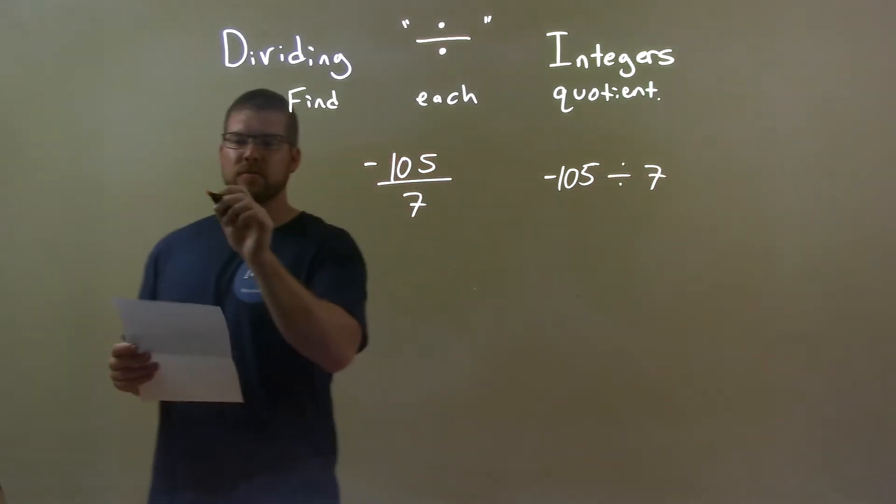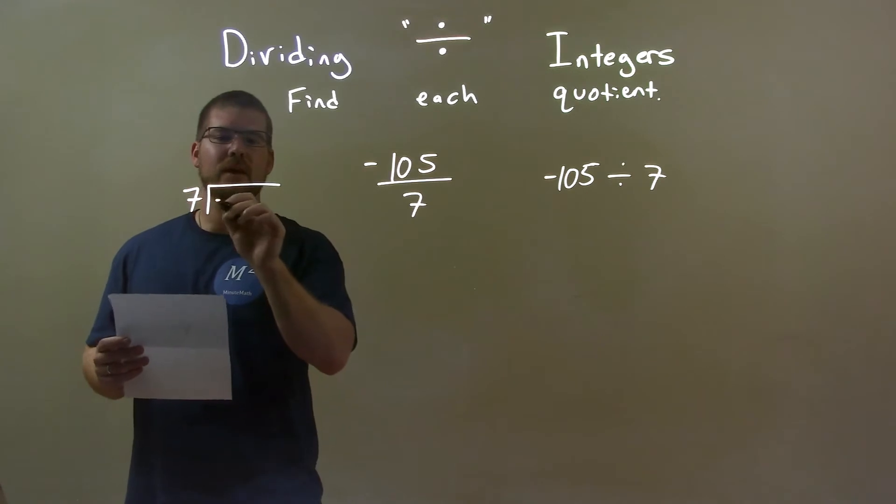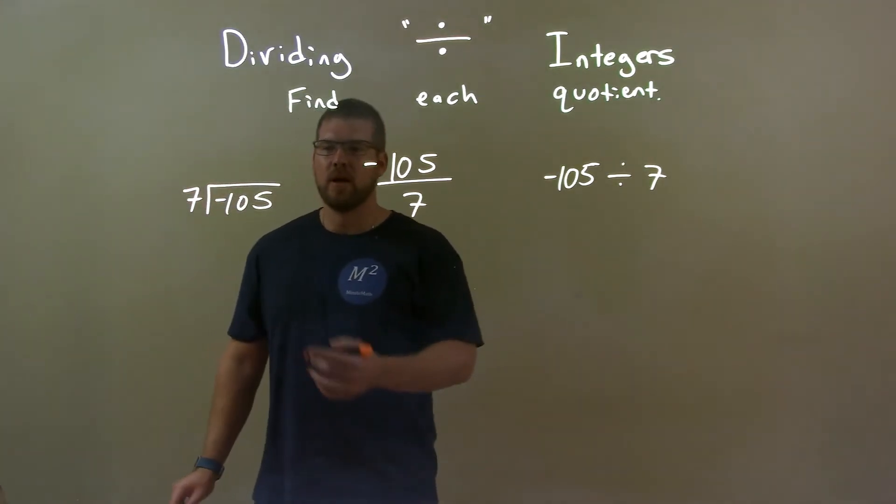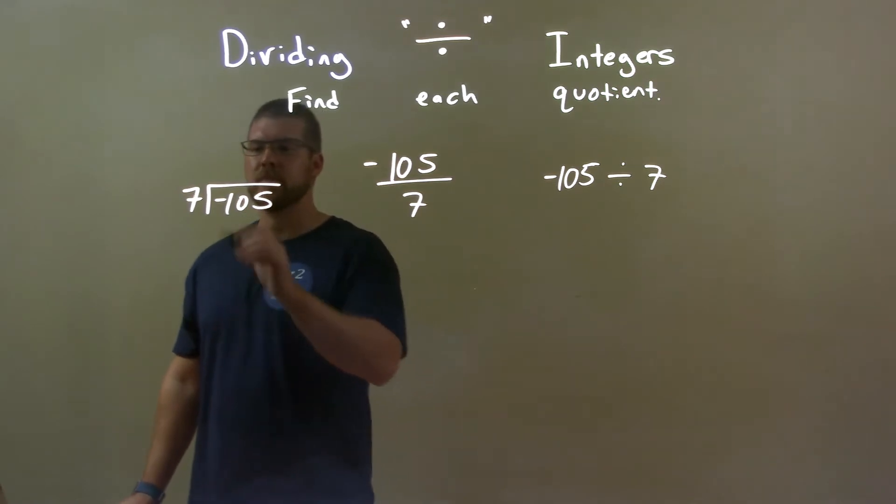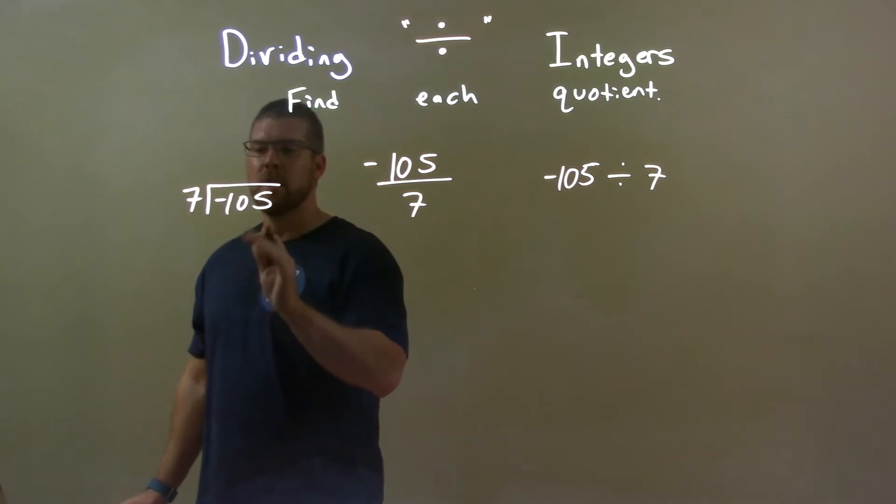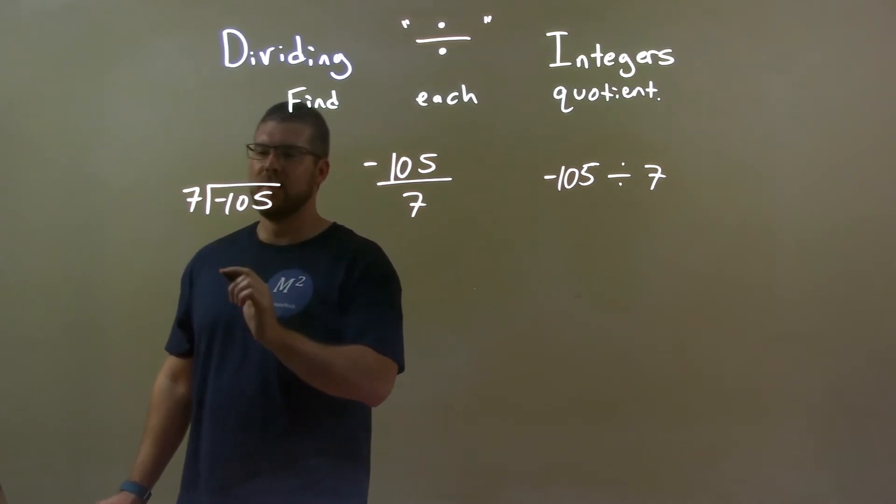Or, long division form, 7 goes into negative 105. So for this one, I'm going to use long division here. 7 goes into 105, and I'm going to ignore the negative part for right now. Can't forget that at the end.